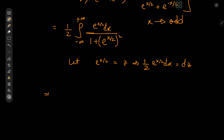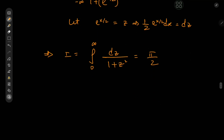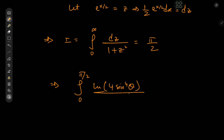So we have the integral from 0 to ∞ of dz/(1 + z²), which is the arctangent function. As the argument tends to infinity we get π/2, and at 0 we get 0. This is extremely cool because it implies the integral from 0 to π/2 of log(2 sin²θ)/log(tan θ) dθ = π/2. And multiplying through by 2, the integral of log(4 sin⁴θ)/log(tan θ) dθ from 0 to π/2 equals π.